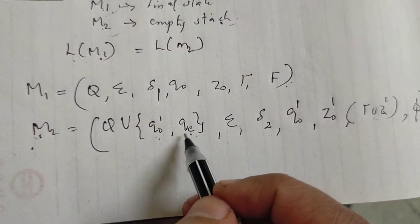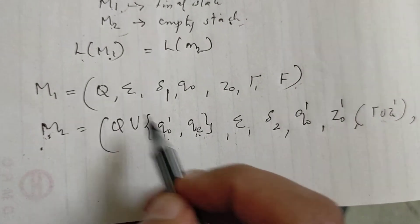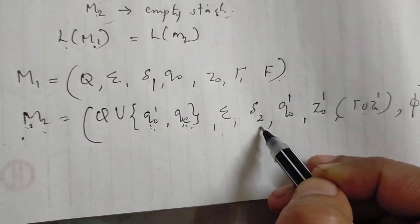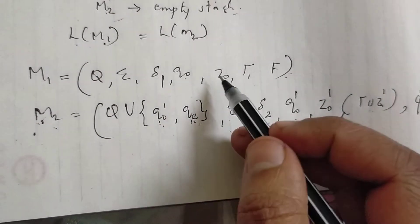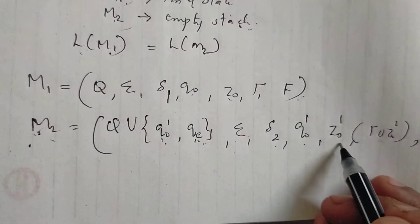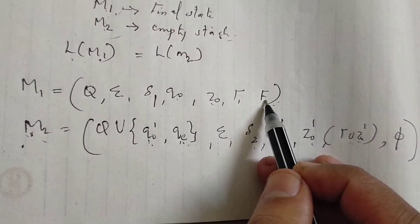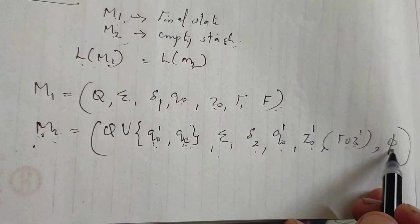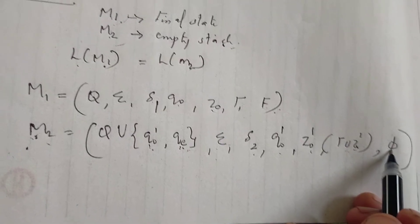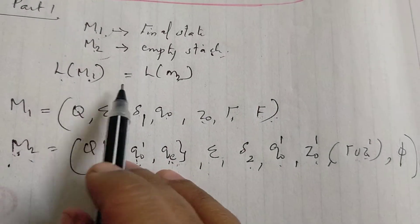We add an additional state qe to M2. The starting state is q0 and q0-prime. The bottom of the stack is z0-prime. We will accept the final state. L of M1 is equal to L of M2.